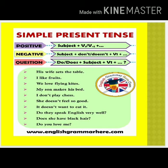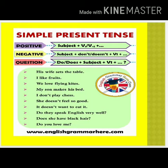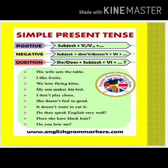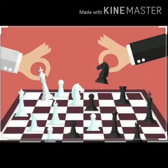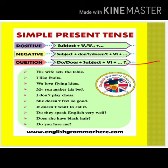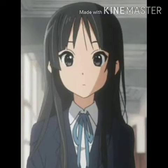The first one is simple present tense. For a positive or affirmative sentence, we apply the formula: Subject + Verb1 (or Verb+s/es) + Object. Example: 'I like fruits' and 'He likes fruits.' For a negative sentence, we use: Subject + do not / does not + Verb1 + Object. Example: 'I do not play chess' and 'She does not feel so good.' For an interrogative sentence, we use: Do/Does + Subject + Verb1 + Object + question mark. Example: 'Does she have black hair?' and 'Do you love me?'